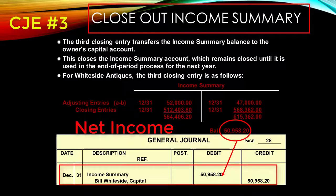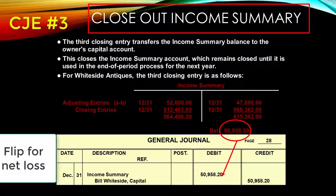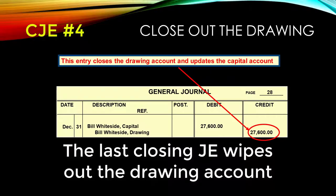Just as we did in the service firm, our entry to close out the income summary includes a debit to income summary and a credit to capital. This is the journal entry when the company has a net income — if a loss exists, this entry would be flipped. The fourth closing entry is identical to the service-oriented firm: it closes out the drawing. Since drawing has a normal debit balance, the drawing account is credited, with the offsetting debit going to the capital account, because drawing makes the capital account go down.